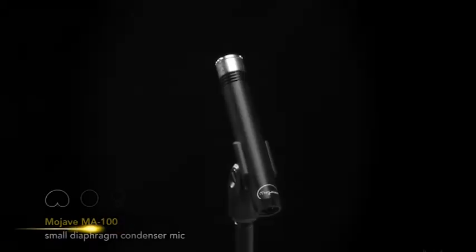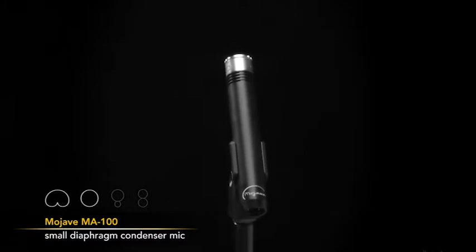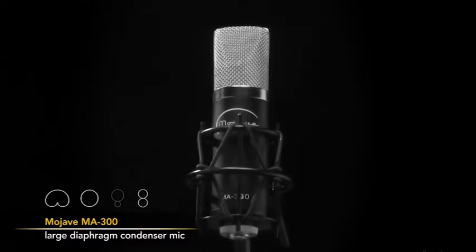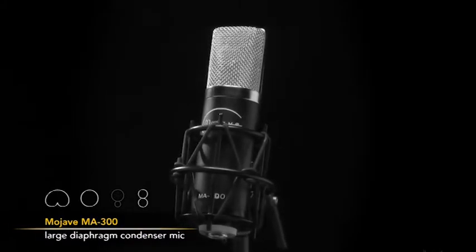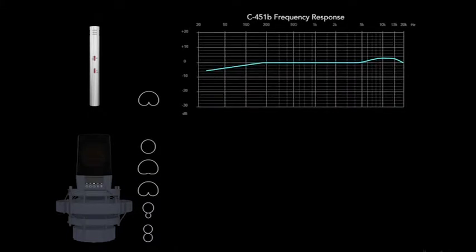Condenser microphones come in what are known as small diaphragm and large diaphragm versions. Small diaphragm versions have a single pickup pattern and the large diaphragm versions have multiple pickup patterns. Small diaphragm versions also have a slightly lower frequency response.